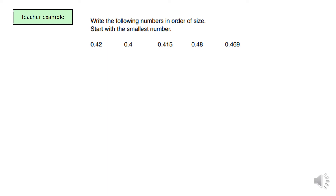One thing you will notice on each part of the question — for example, the first part has two decimal places, the second has one decimal place, the third has three decimal places, the fourth has two decimal places, and the fifth has three decimal places. So what we need to do is make sure all numbers have three decimal places. On the first one I'll add one zero, so we've got three decimal places.